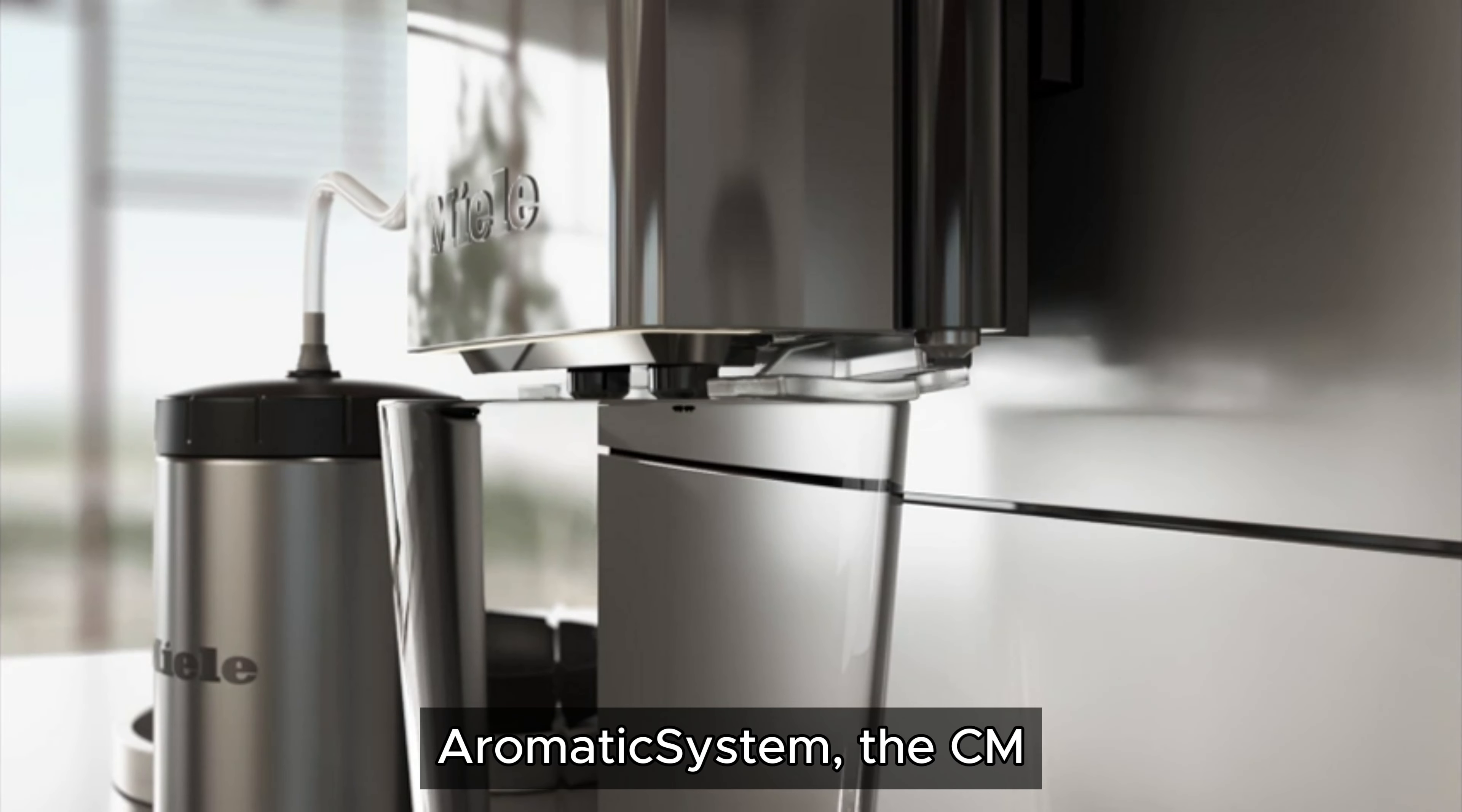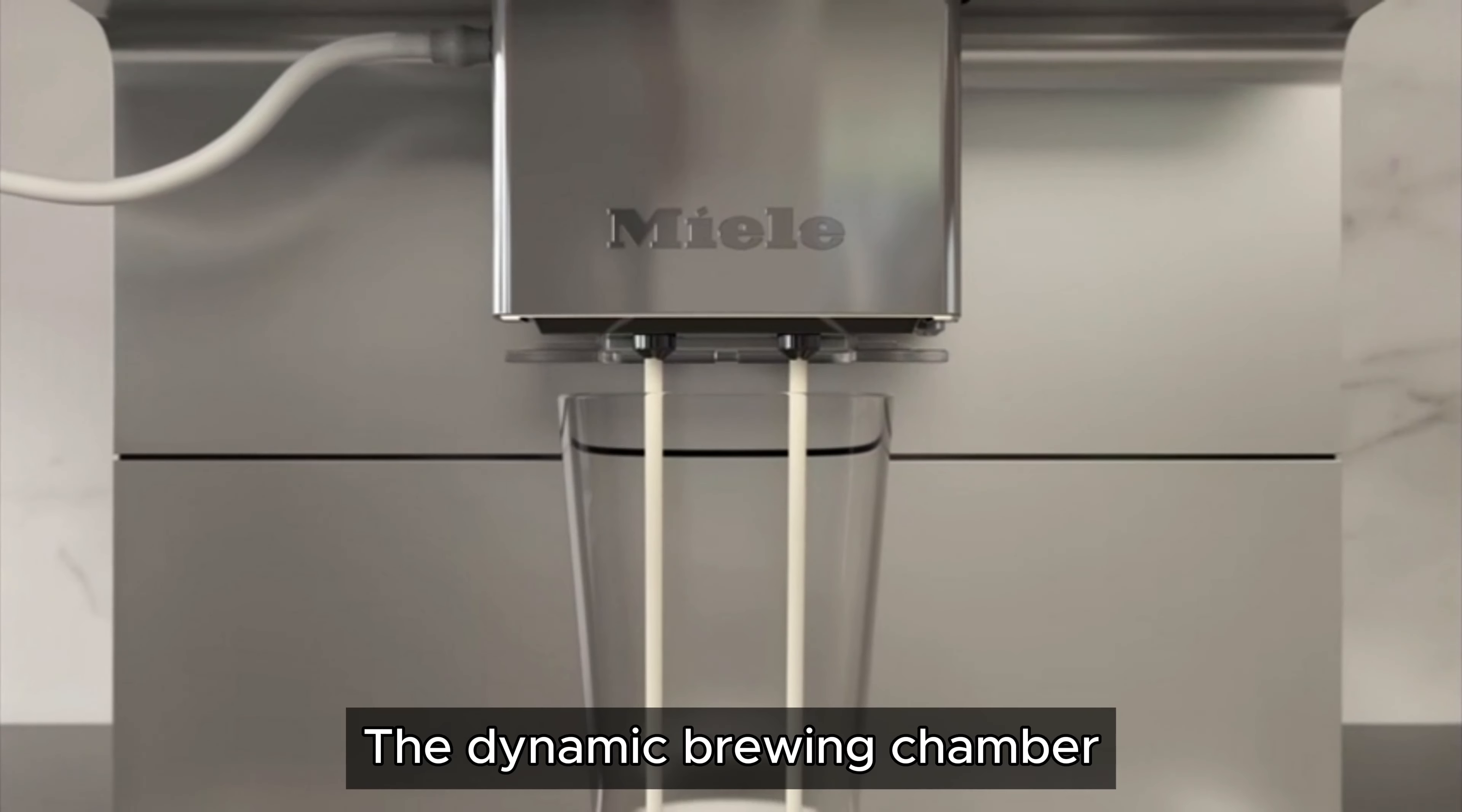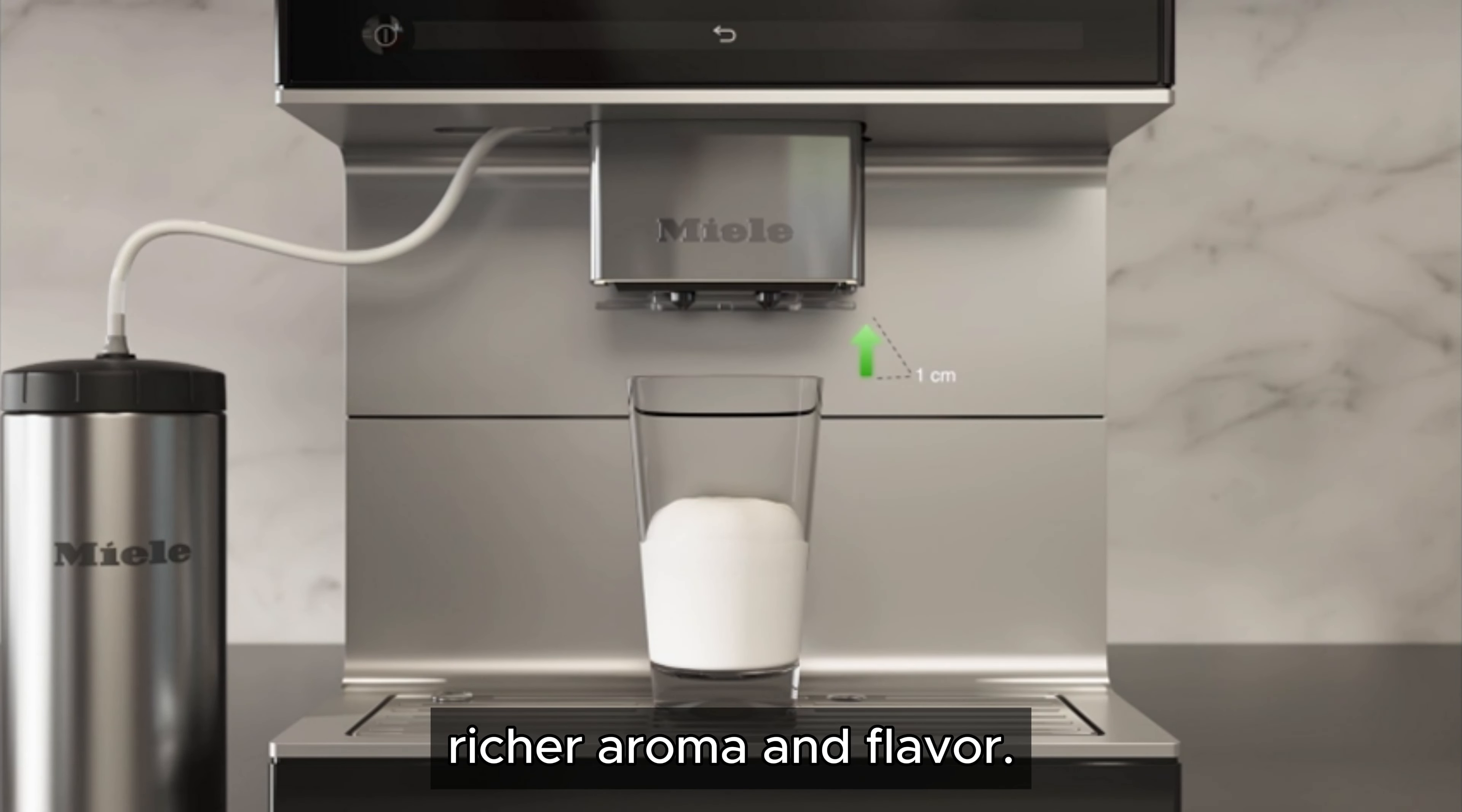Equipped with Miele's Aromity System, the CM7550 ensures optimal brewing conditions for every cup. The dynamic brewing chamber expands when water flows in, allowing the coffee grounds to mix more thoroughly, resulting in a richer aroma and flavor.